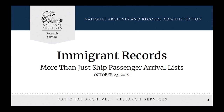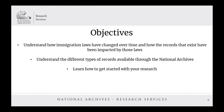I am Elizabeth Burns and today we are going to discuss how immigration laws have changed over time and the impact this had on the records that exist today. We'll look at the different types of records available through the National Archives and address how you can get started with researching your immigrant ancestors. The National Archives holds records created by the federal government in the course of its daily work, so this presentation will focus on these federally created materials. Keep in mind there may be resources available through state archives, local historical societies, etc., that could prove useful to your searches, especially if the events of interest occurred prior to the formation of the United States.